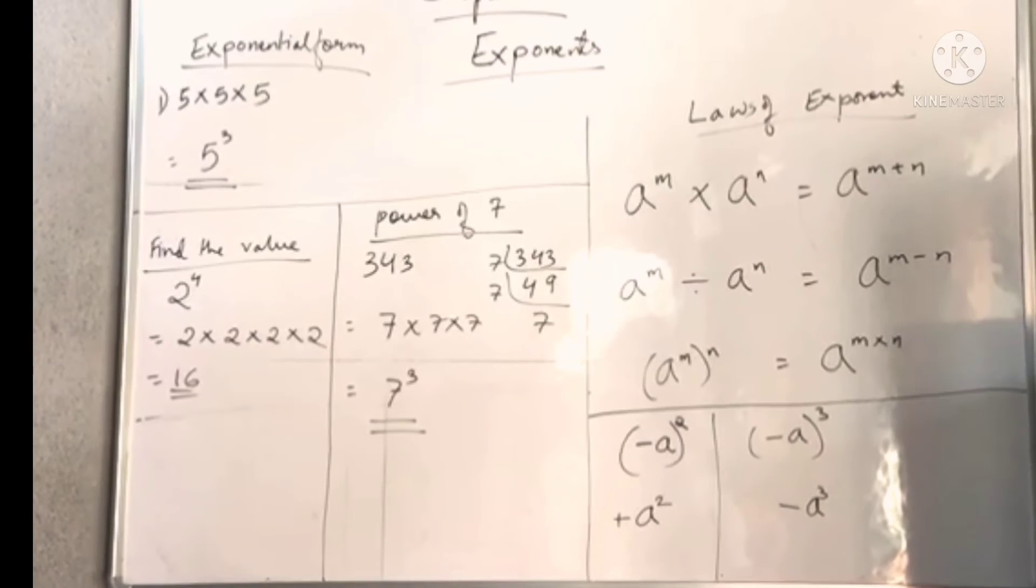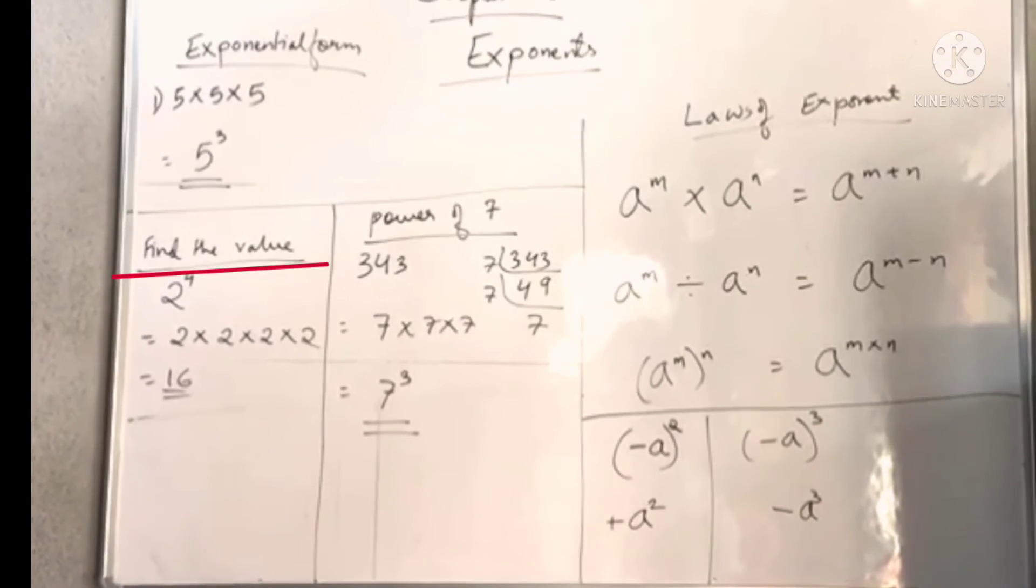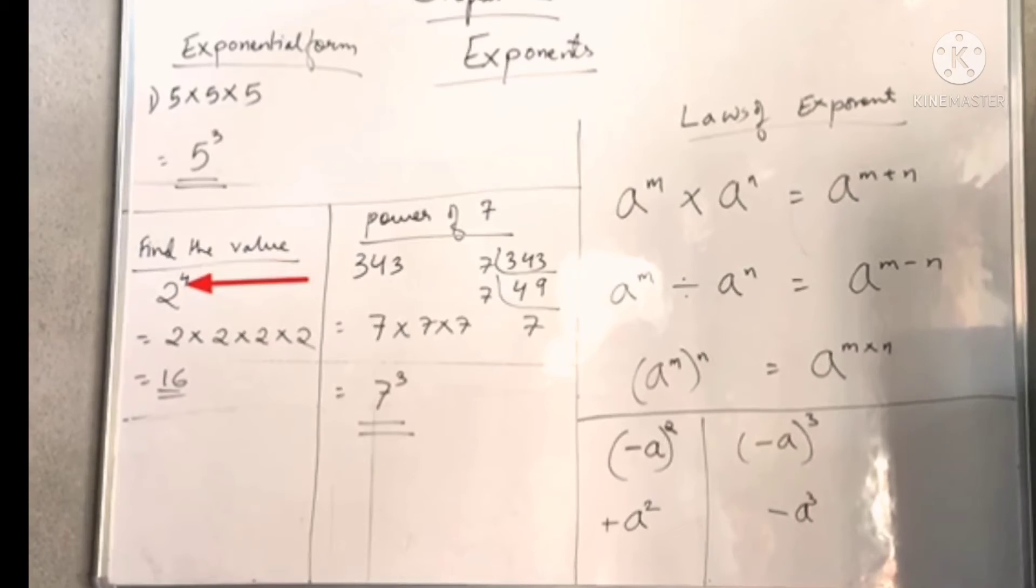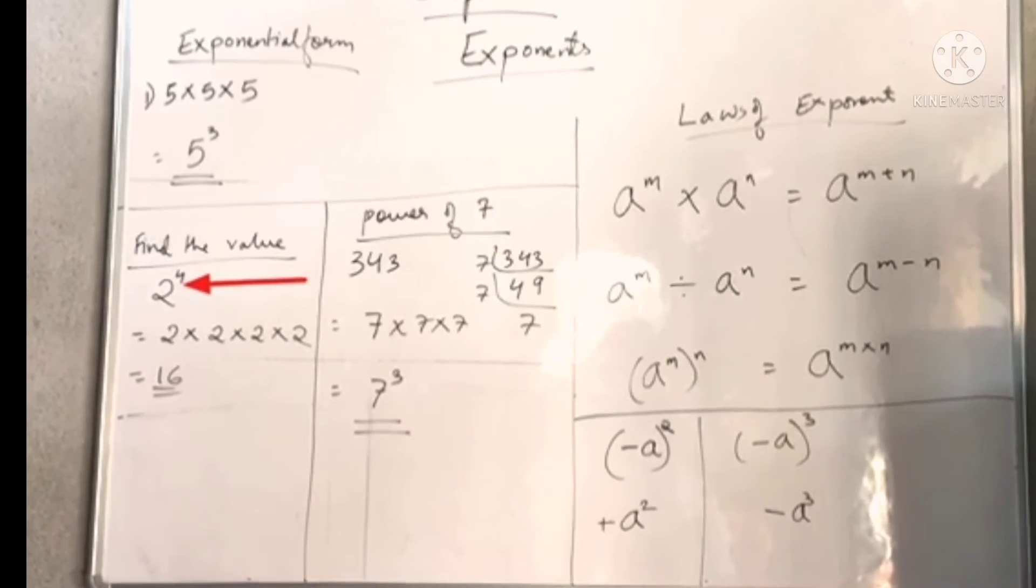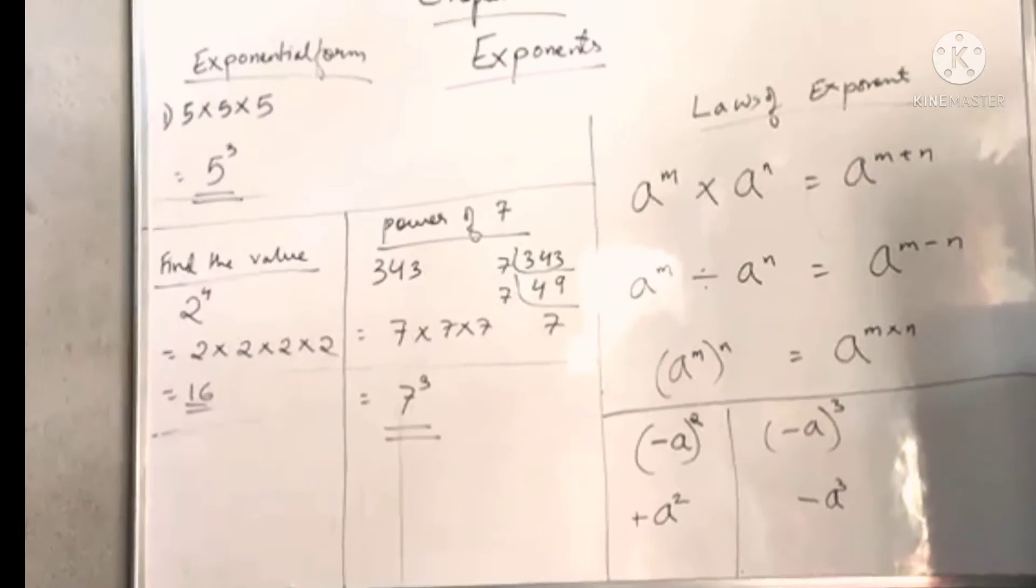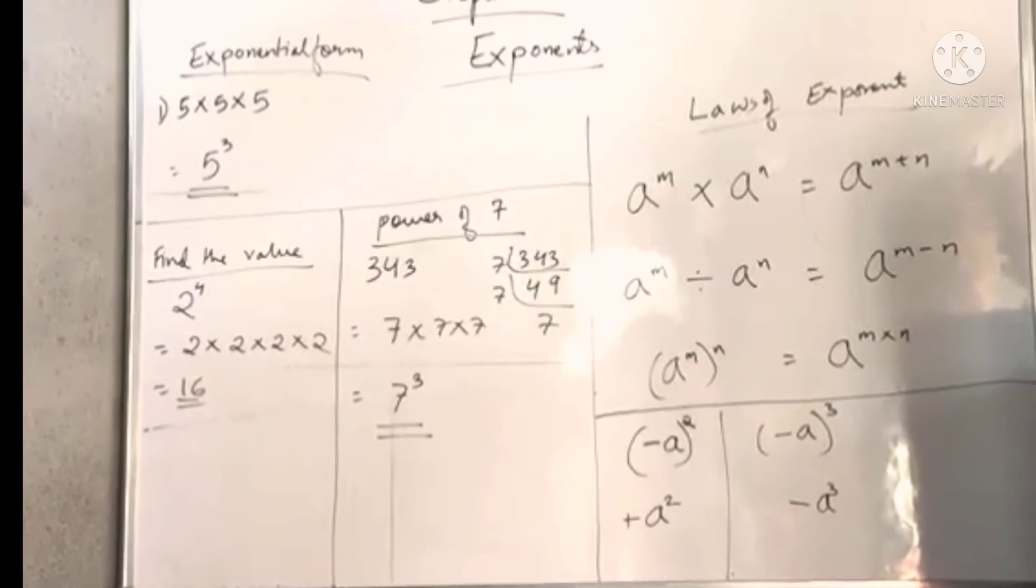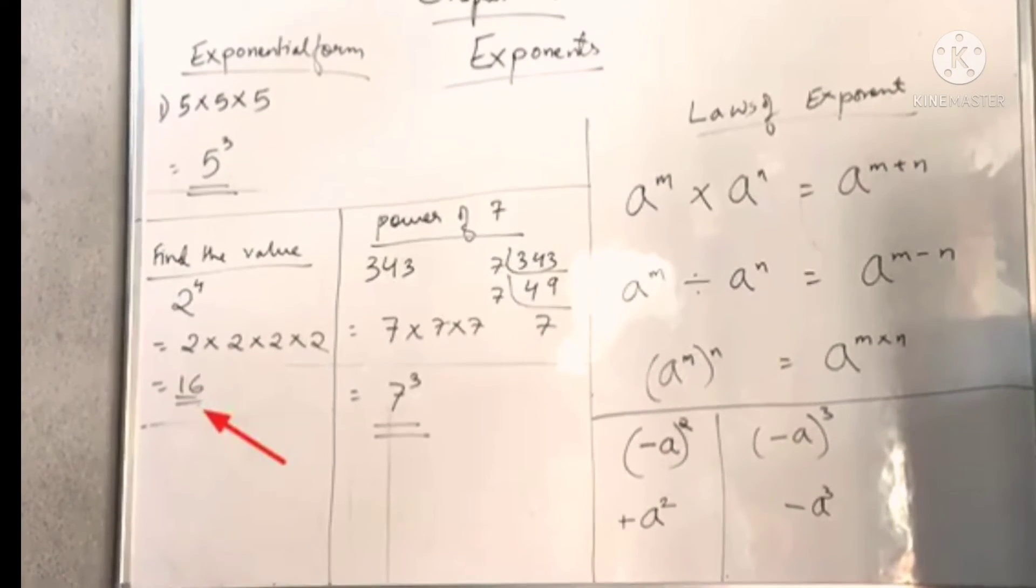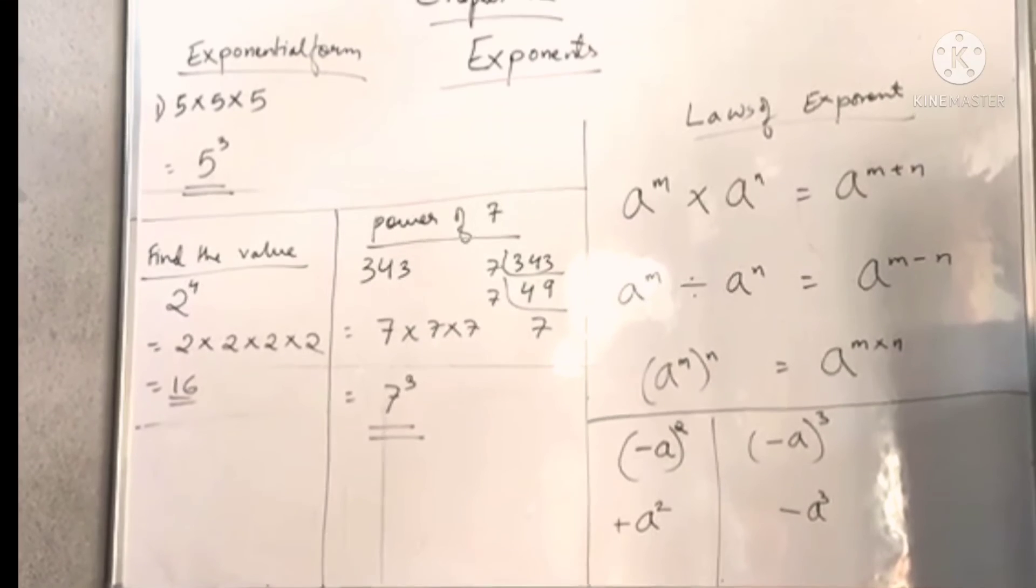If the question is to find the value, say two to the power four, that means you multiply two by itself four times. When we multiply two four times, we get 16 as an answer. In this manner, you'll be doing either exponential form or finding the value.